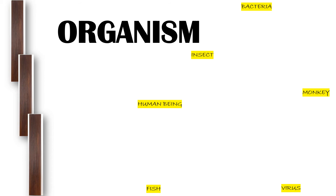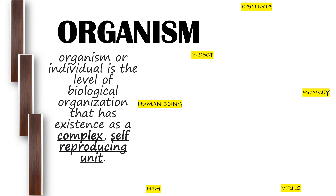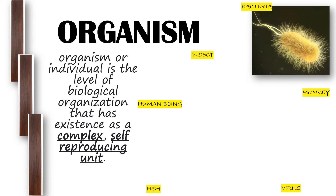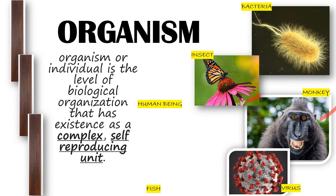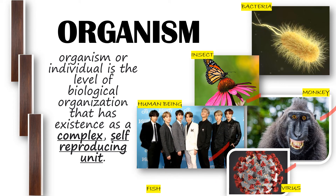Next we have organisms. An organism or individual is a level of biological organization that has existence as a complex, self-reproducing unit. Examples include plants, insects, monkeys, viruses, human beings, and fish. These living things are considered organisms — from the smallest to the highest form — because they perform complex functions and also reproduce to produce new generations.